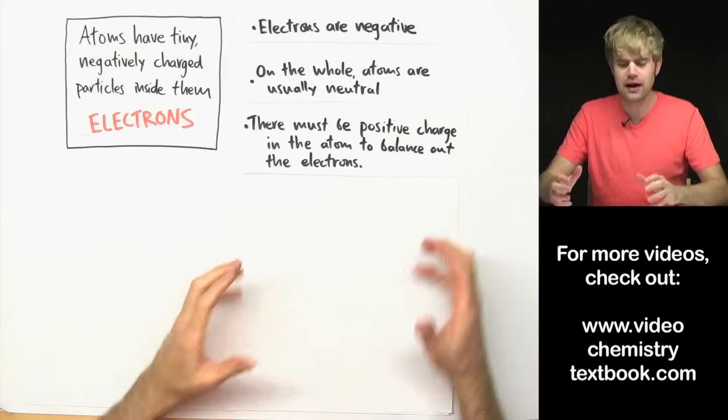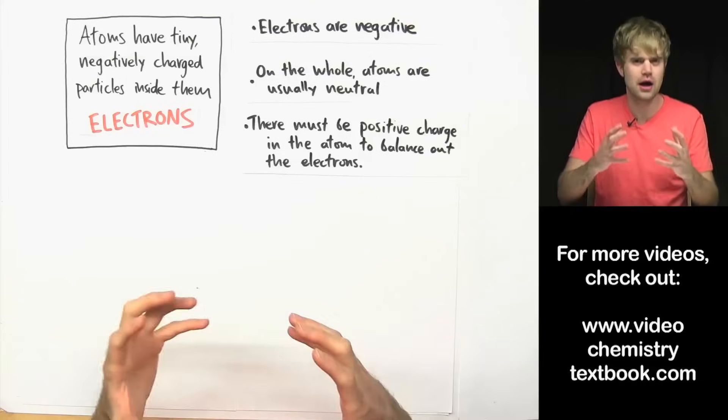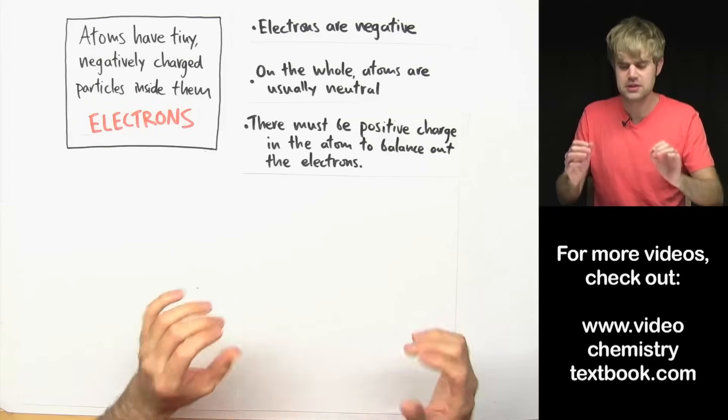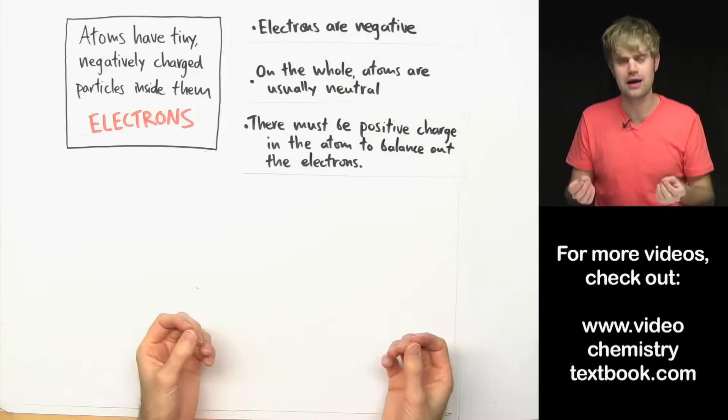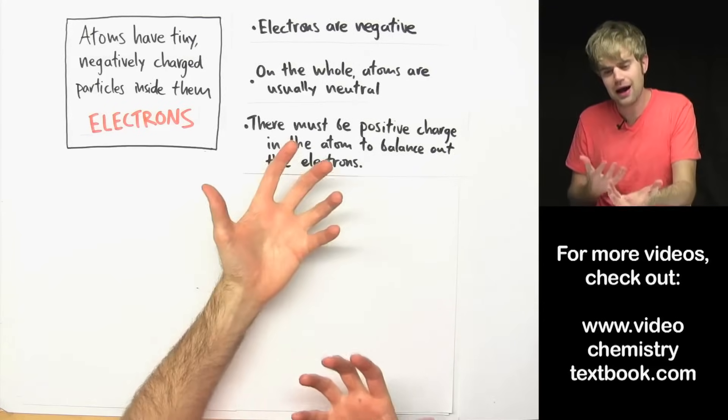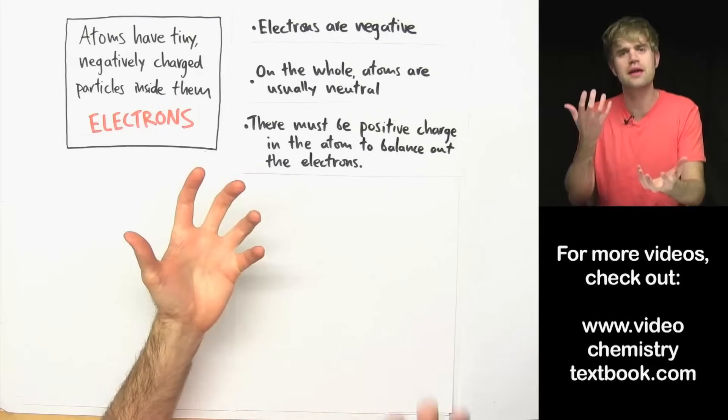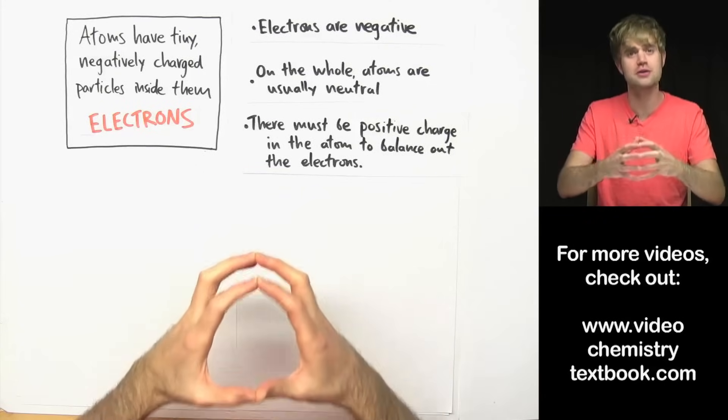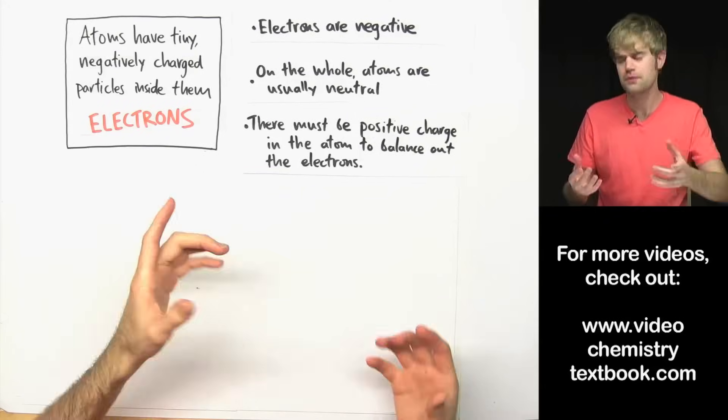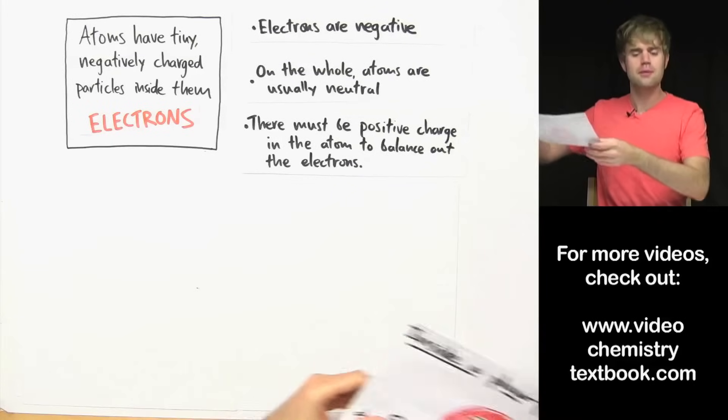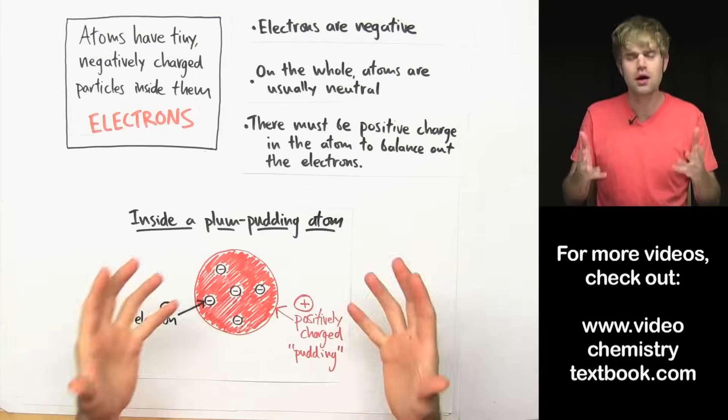So, Thompson realizes that in order for the atoms not to have a charge, there must be some positive charge in the atom that can balance out the negative charge of the electrons. And then the positive and the negative balance out and the atom then as a whole doesn't have a charge. So he comes up with a model that he calls the plum pudding atom.